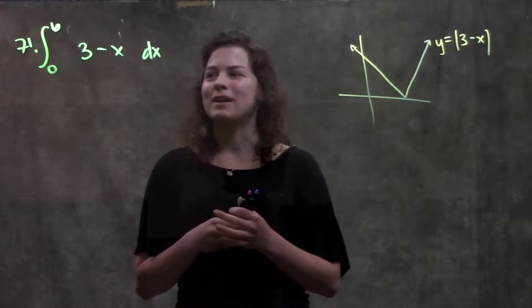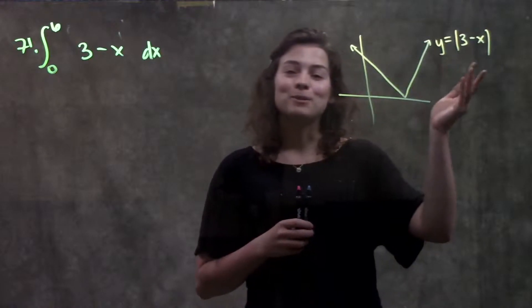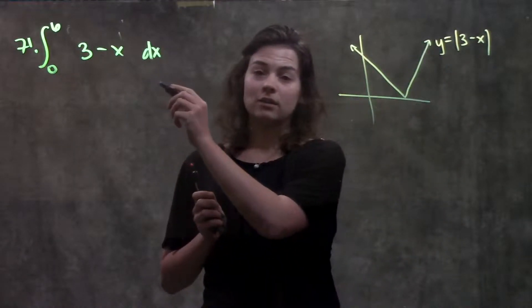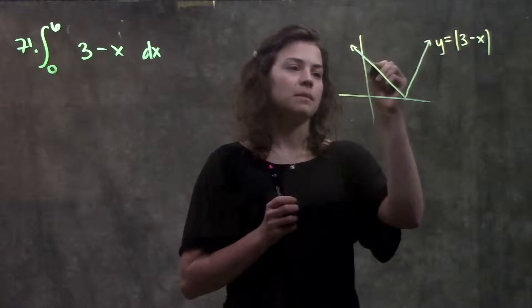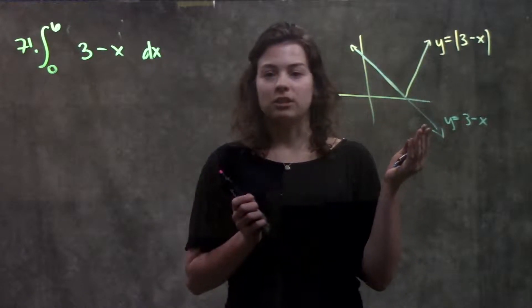So I erased my absolute value signs, but now I have an entirely new function. My original function, the absolute value of 3 minus x, looks something like this. The function I have written here though, 3 minus x, looks something like this. And these are different functions.